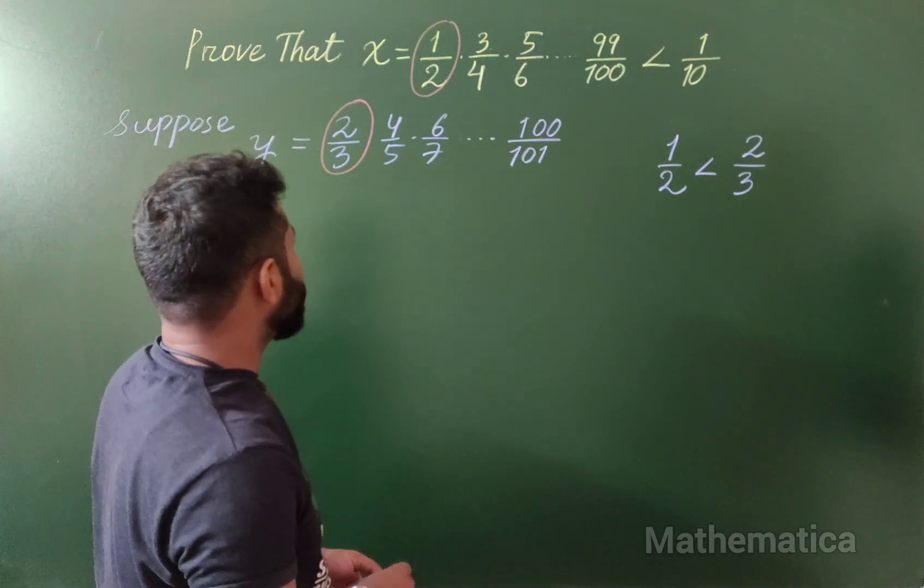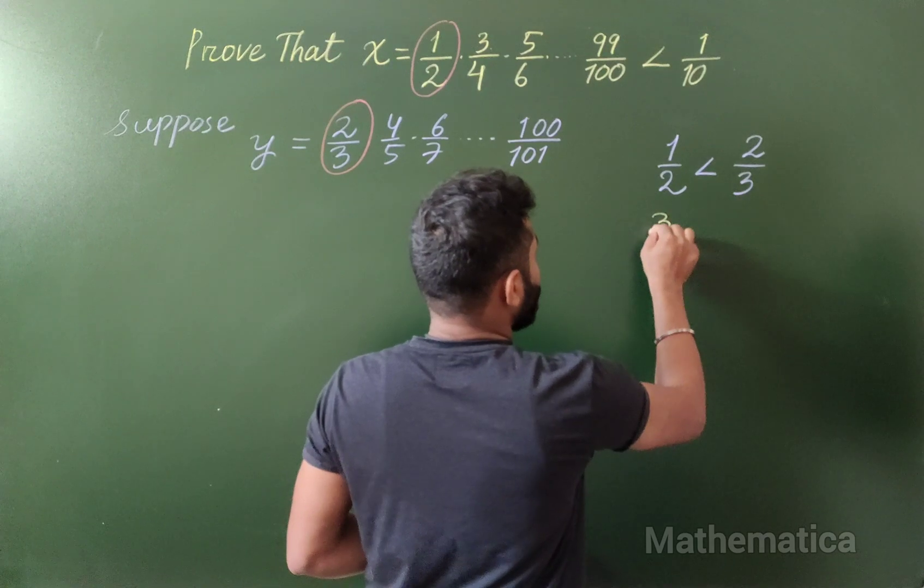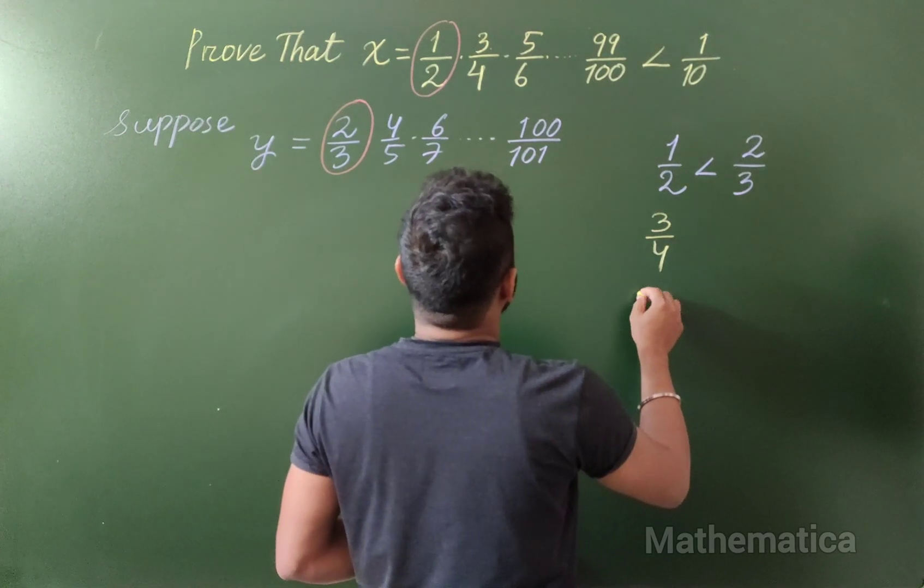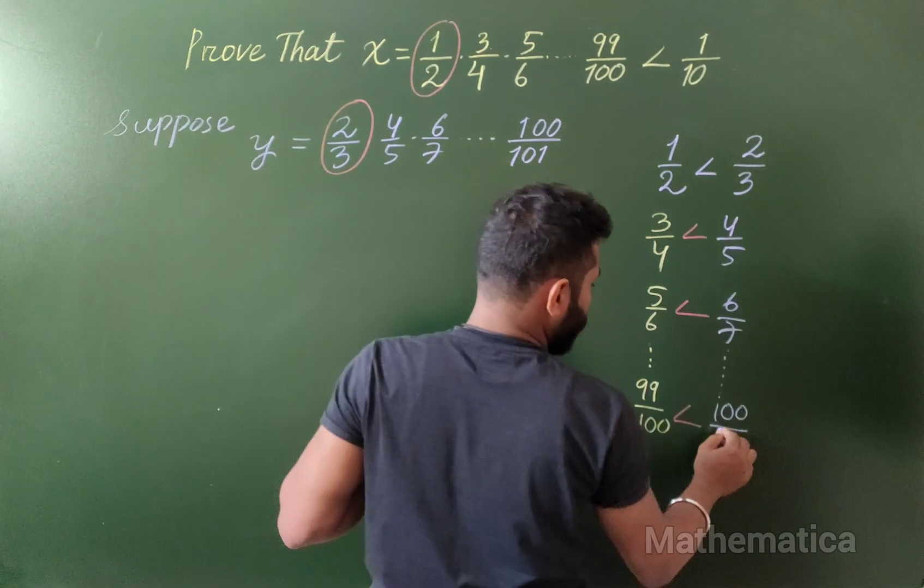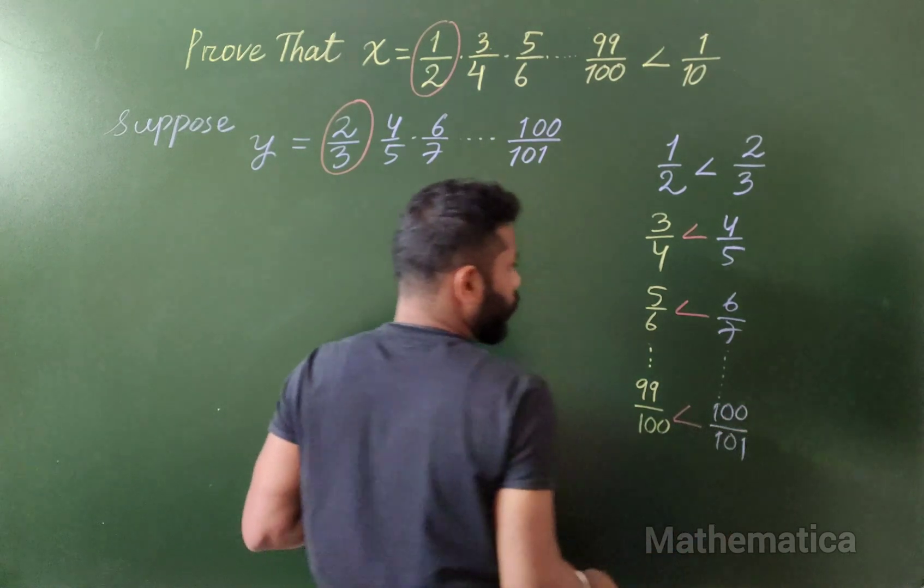Similarly, if you see 3/4 and 4/5, then 5/6, all the way to 100/101.